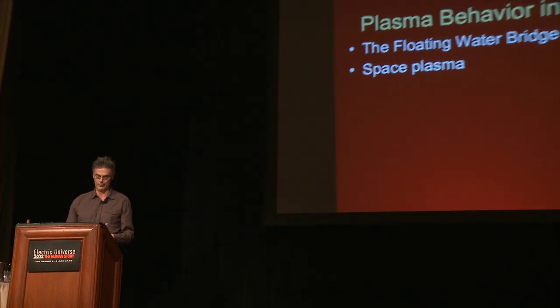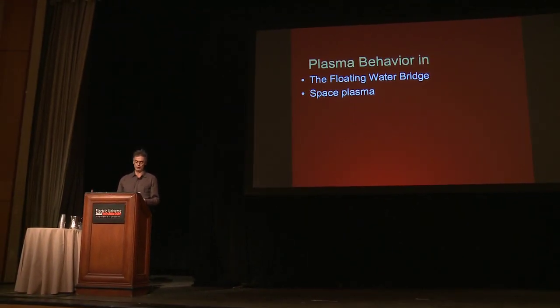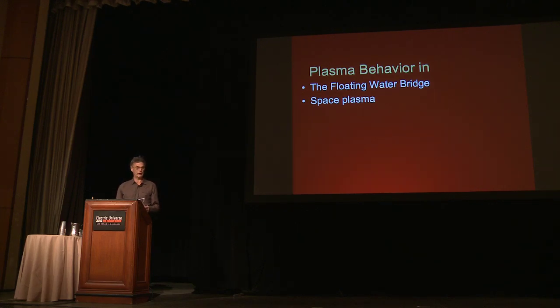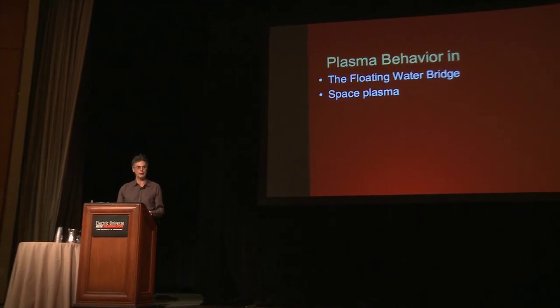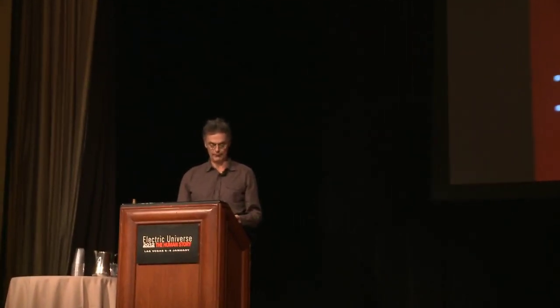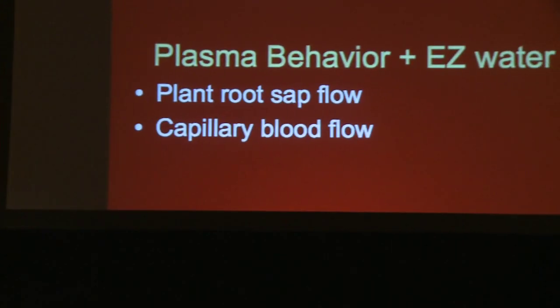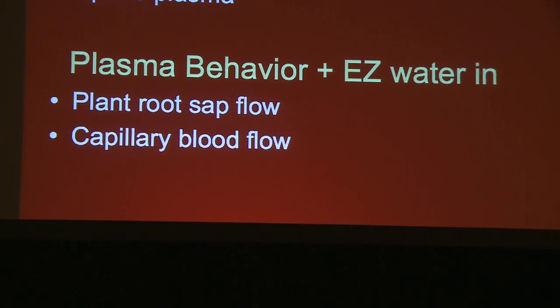What we're going to do is look at three examples of partially ionized liquids and compare their behavior to plasma behavior in space. The structure of the talk: first, we'll examine the floating water bridge and the various attempts to explain it without using plasma behavior. Then we'll compare it to the way plasma behaves in space. In the second half of the talk, we'll use the same plasma behavior and Professor Pollock's easy layers in water to offer an explanation of unusual fluid flows in plant roots and blood vessels.